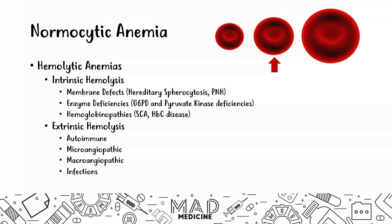Intrinsic hemolytic anemias are problems within the cell. When you have problems within the cell, you can have problems within the membrane, you can have enzyme deficiencies, or you can have hemoglobinopathies. All of these will lead to hemolysis of the red blood cell intrinsically.